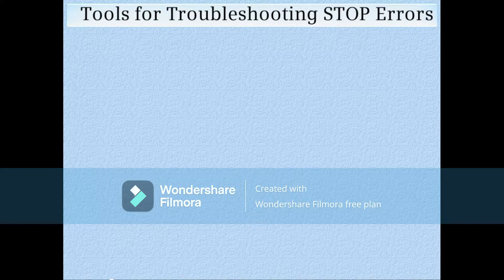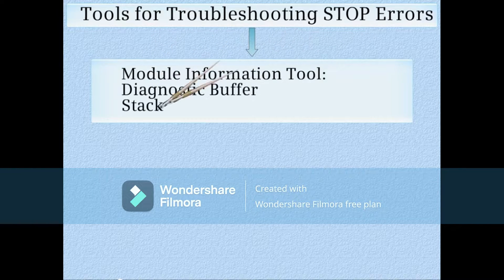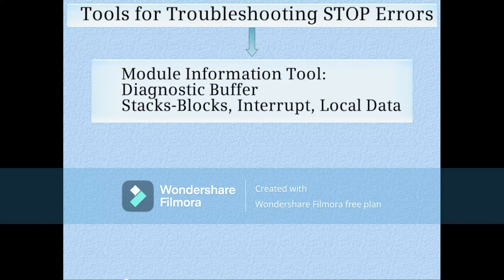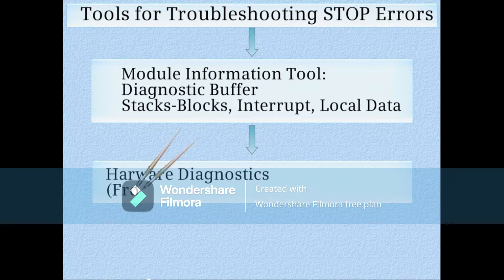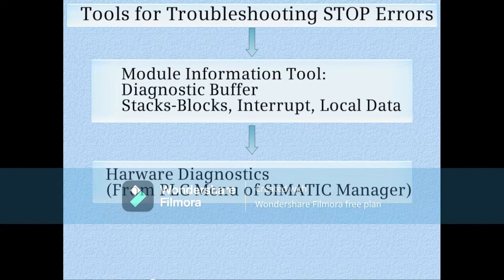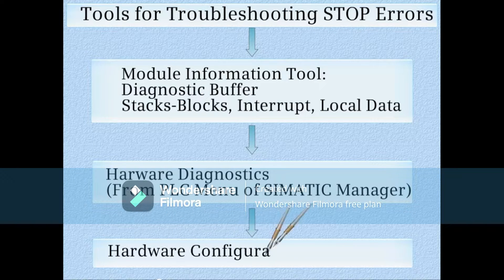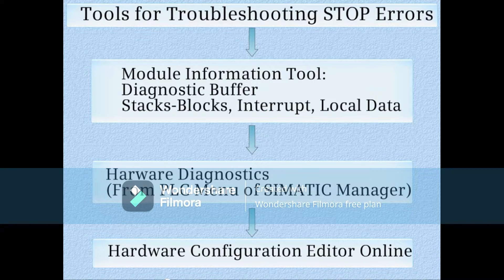Here are the typical tools used for troubleshooting system-detected or stop errors. The module information tool has a diagnostic buffer tab containing diagnostic messages from the CPU, and a stacks tab which gives access to the blocks, interrupt, and local data stacks. You can access hardware diagnostic screens from the PLC menu of SIMATIC Manager and take the hardware configuration editor online for graphical troubleshooting of the hardware system.